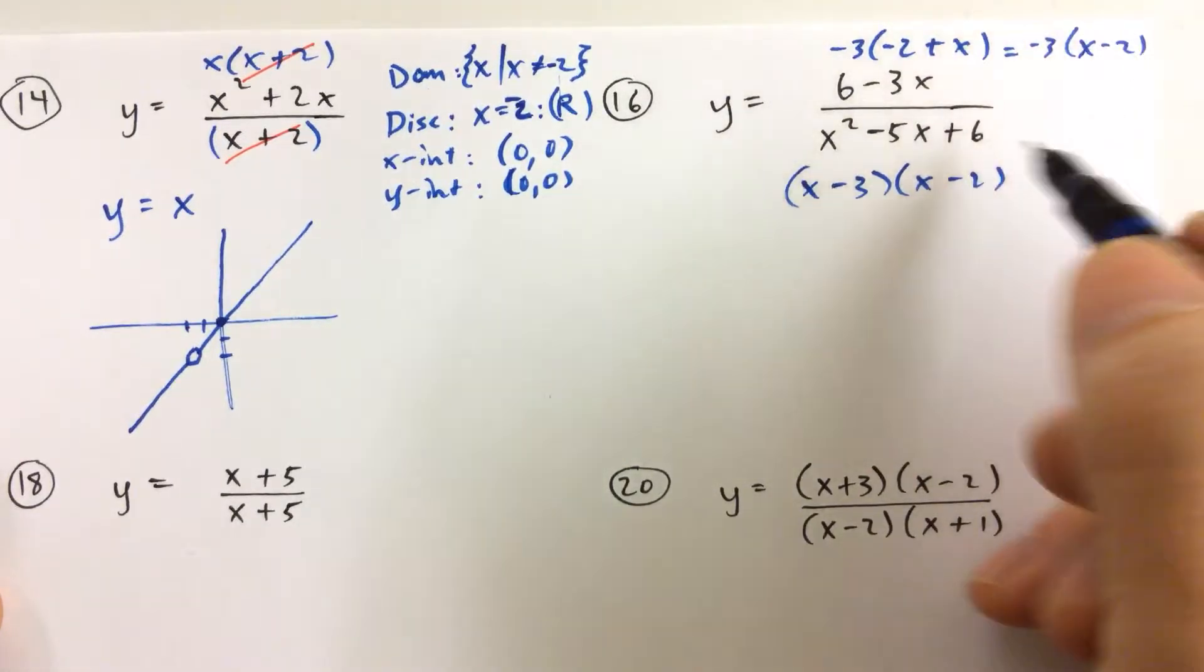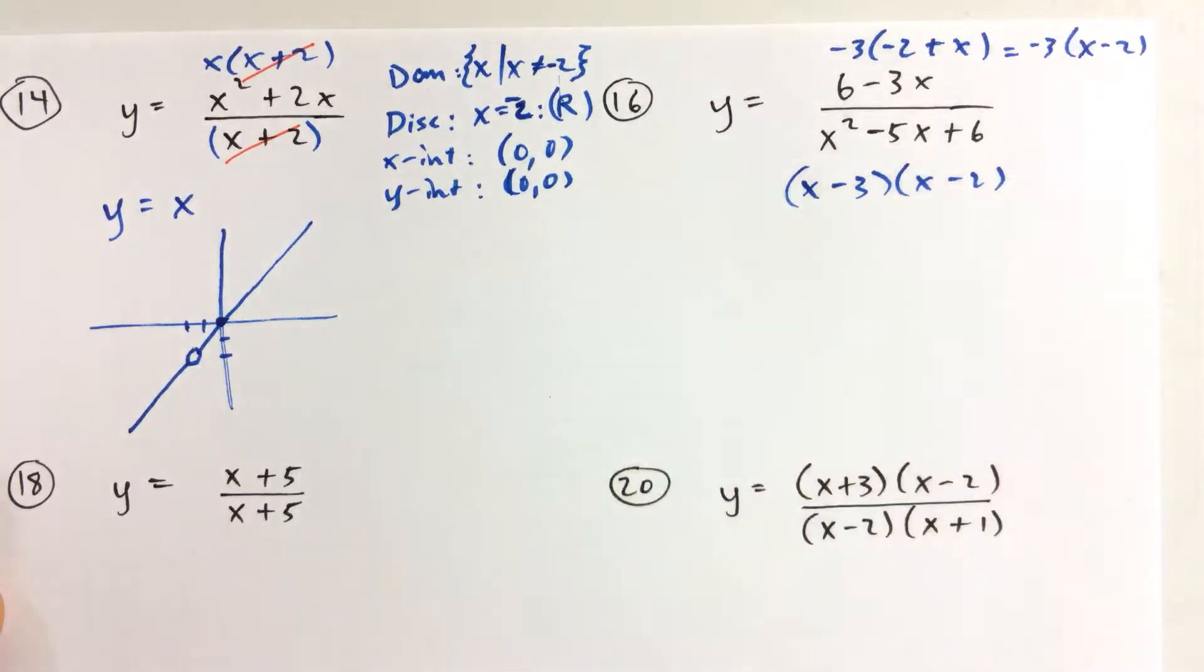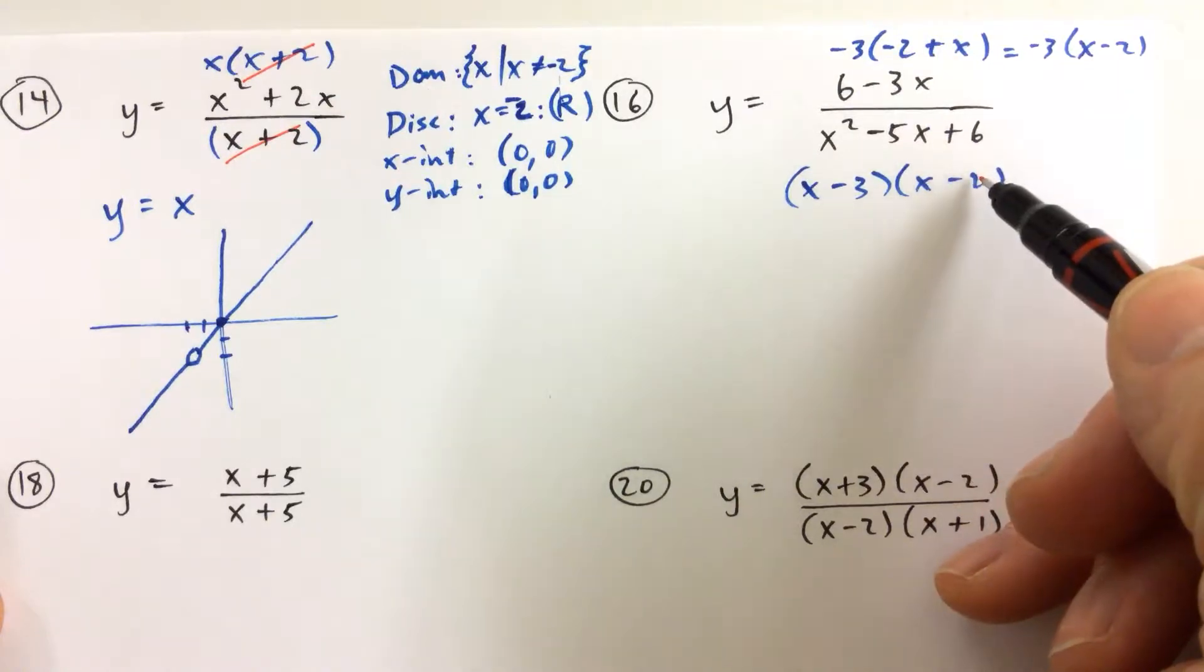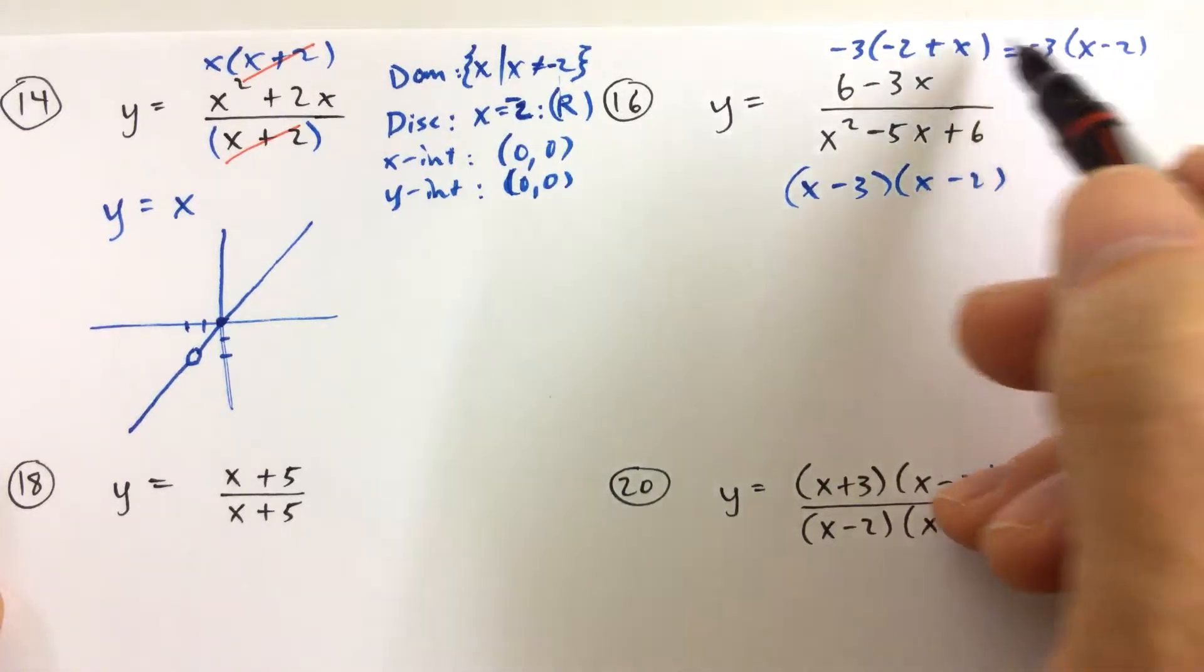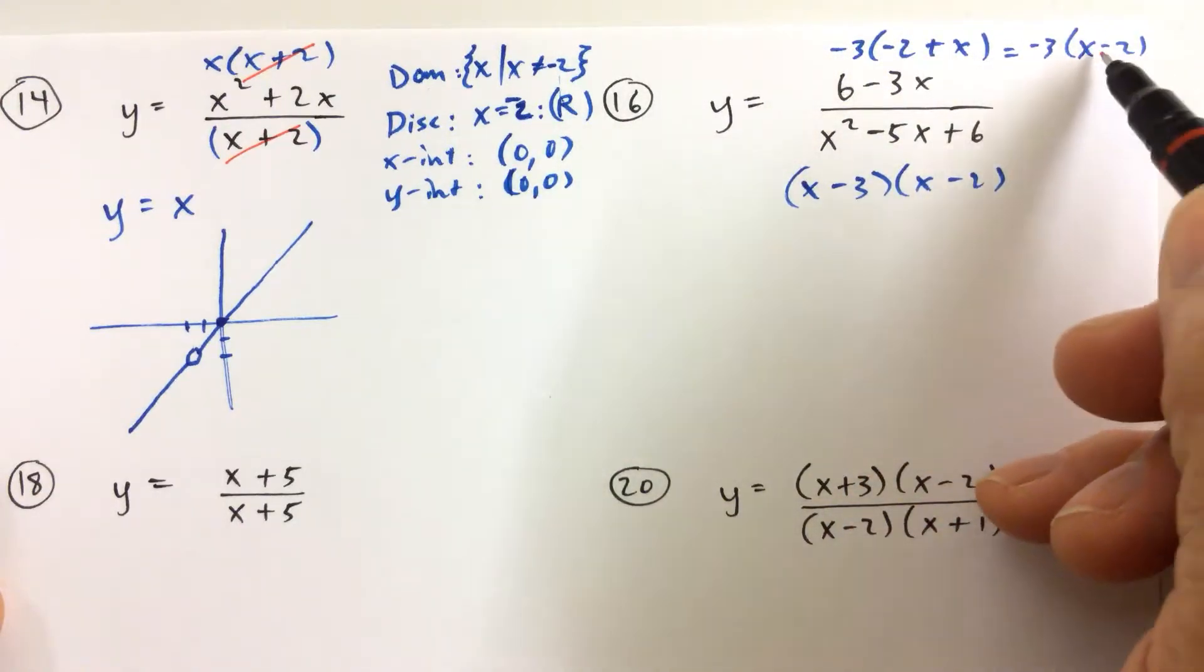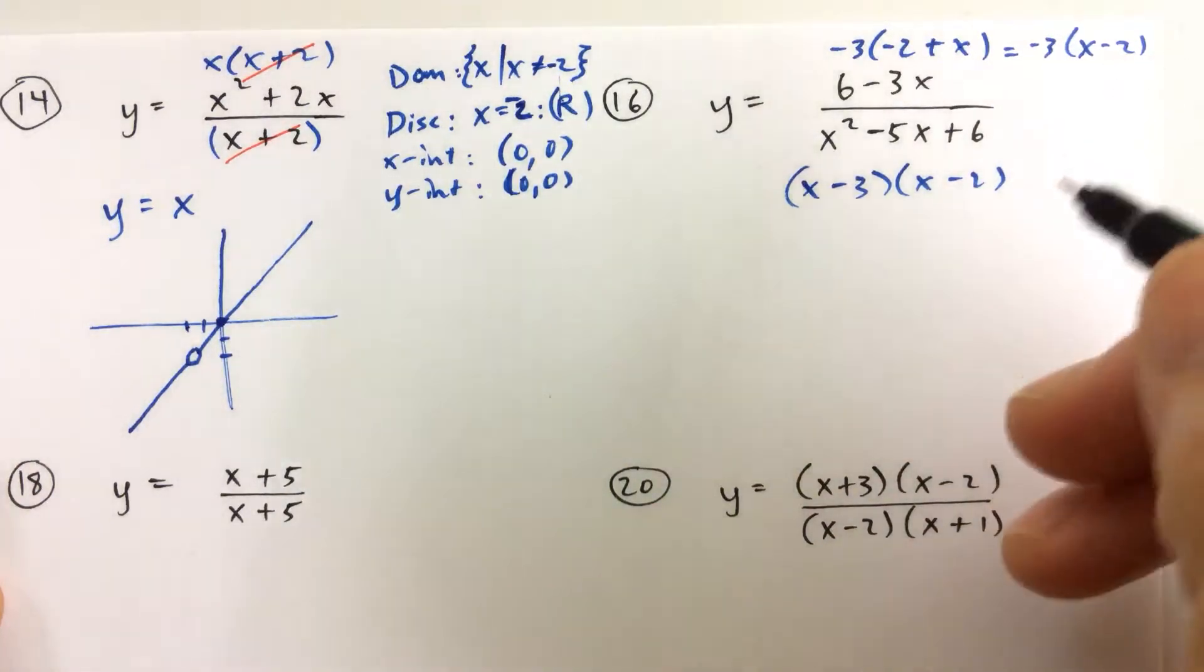And why did I do that? Well, I did that because I noticed that x minus 2 is a factor in the denominator, and I didn't want to get hung up on that minus sign up there because 2 minus x is not the same as x minus 2. So if I factor out the negative 3, I'm able to make sure that that factor, that x minus 2 factor, is the same as the one in the denominator.